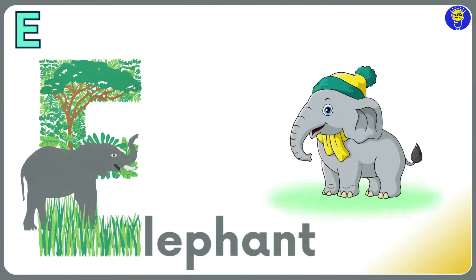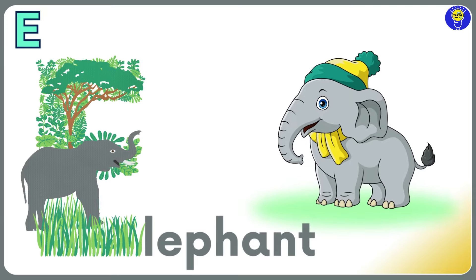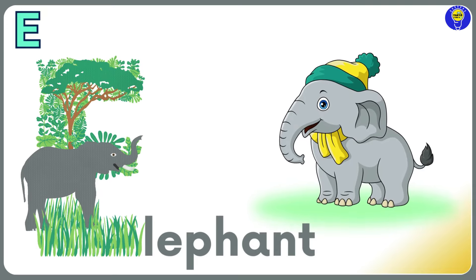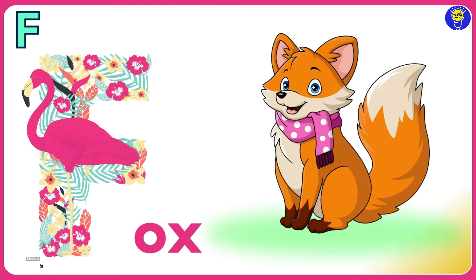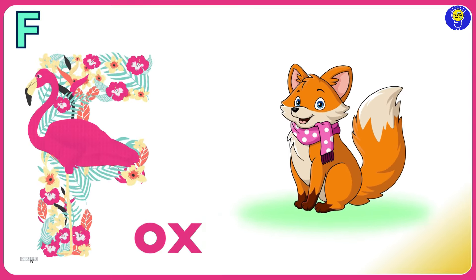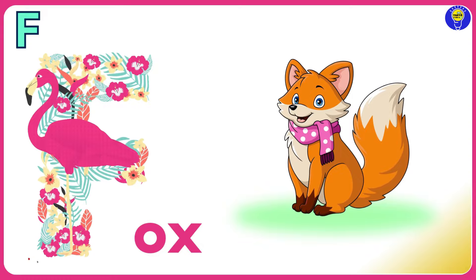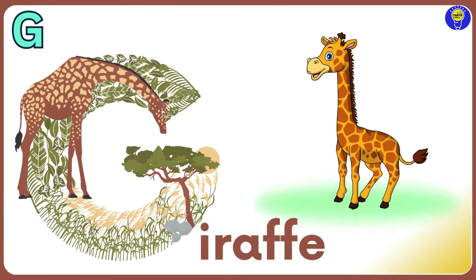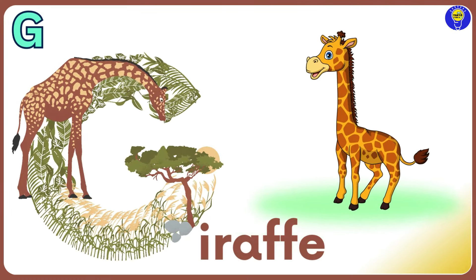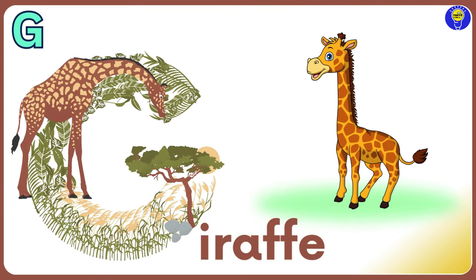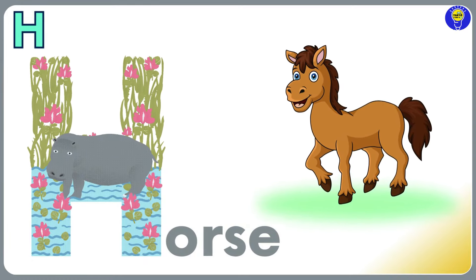E is for Elephant. E, E, Elephant. F is for Fox. F, F, Fox. G is for Giraffe. G, G, Giraffe.